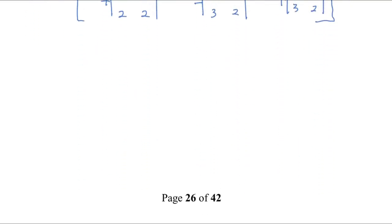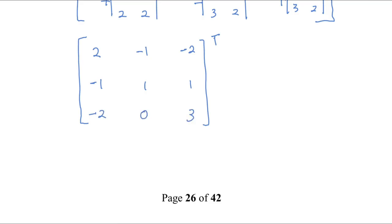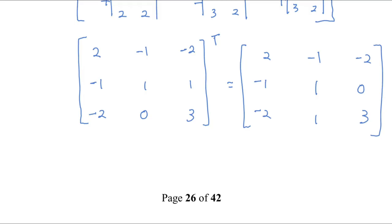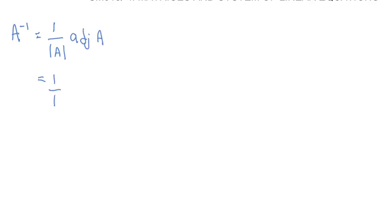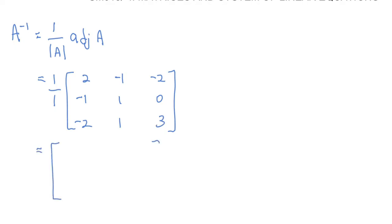After calculating all cofactors, the cofactor matrix is [2, -1, -2; -1, 1, 1; -2, 0, 3]. Transposing this gives adjoint A as [2, -1, -2; -1, 1, 0; -2, 1, 3]. Therefore, A inverse equals 1 over 1 times adjoint A, which gives A inverse as [2, -1, -2; -1, 1, 0; -2, 1, 3].